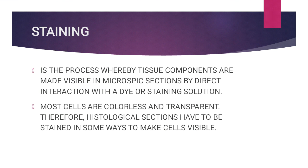Most cells are colorless and transparent, so histological sections have to be stained in some ways to make cells visible. Since our cells are colorless and transparent, staining adds color and helps the medical technologist identify and look at the components of the cells. In this method, a colored compound is used to produce a contrast between different tissues and cellular components.